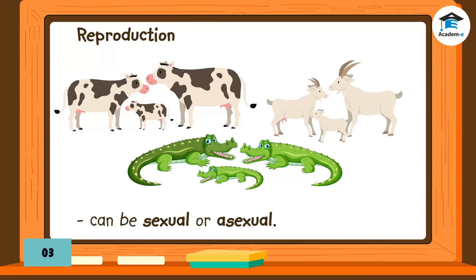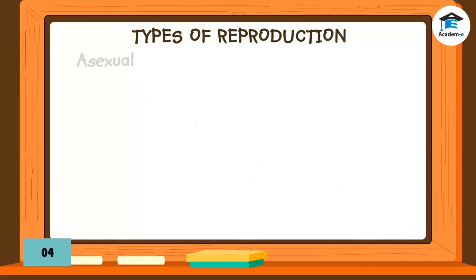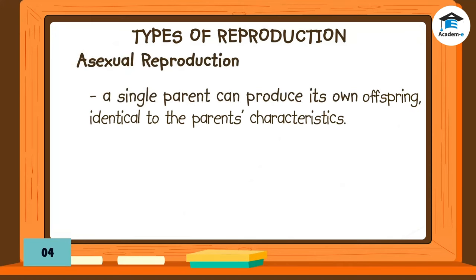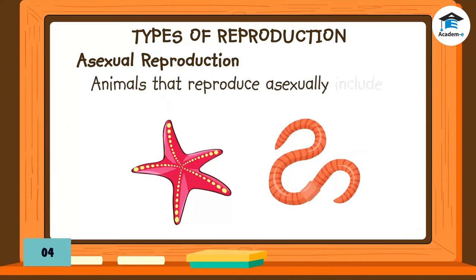Reproduction of non-plant living things can be sexual or asexual. In asexual reproduction, a single parent can produce its own offspring, identical to the parent's characteristics. This process does not need two sex cells, unlike in sexual reproduction. Examples of animals that reproduce asexually include starfish and worms.